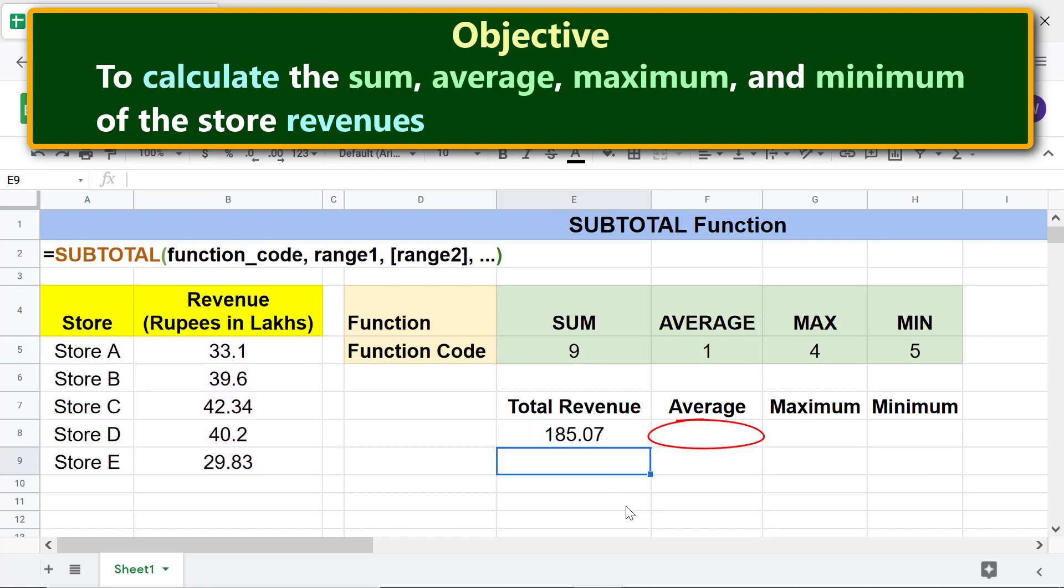To get the average, maximum, and minimum revenue of the stores, we need to simply copy the formula across these cells. Click this cell. Drag this handle across these cells.